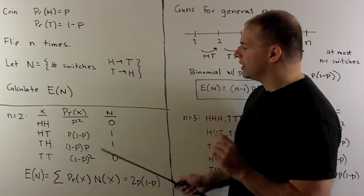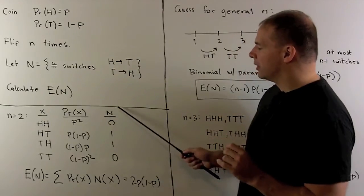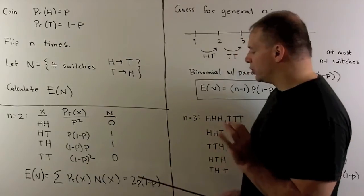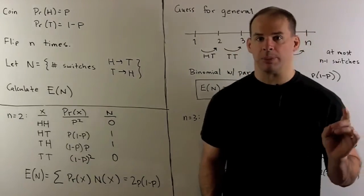For the expectation, take the probability times the number of switches. Take the sum, and that's going to give us two times P times one minus P.